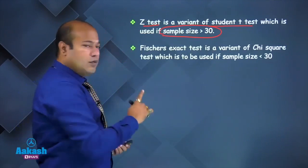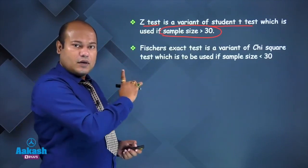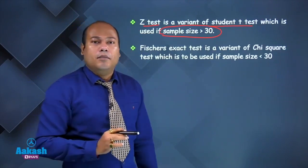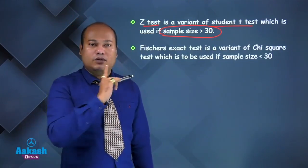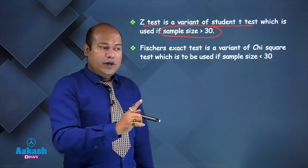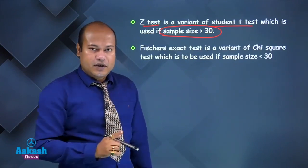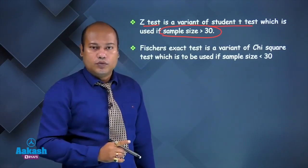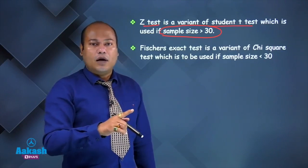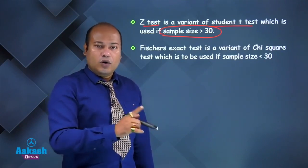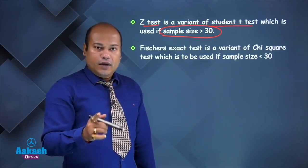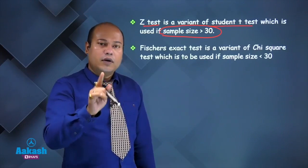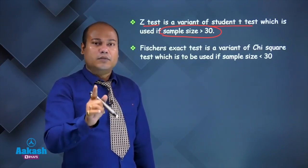If the sample size is more than 30 and z-test is in the options, go for z-test. If the sample size is not mentioned and you are doing comparison in terms of means and standard deviation with paired data and a single group, then use the paired student t-test, because the rule is: if the sample size is not mentioned, always go for the paired student t-test.